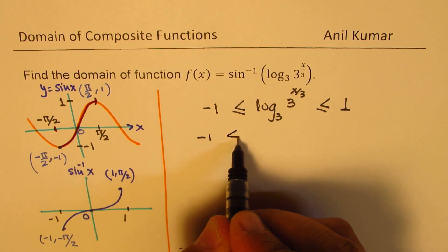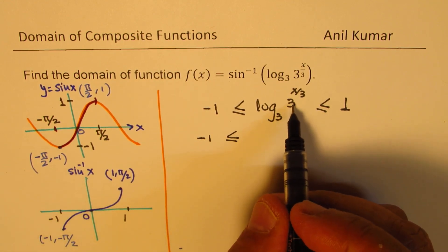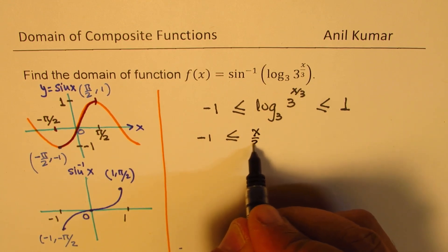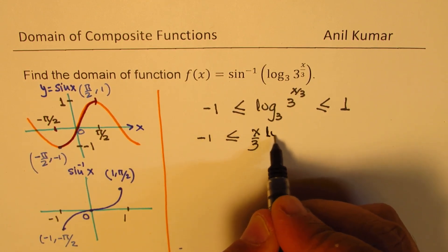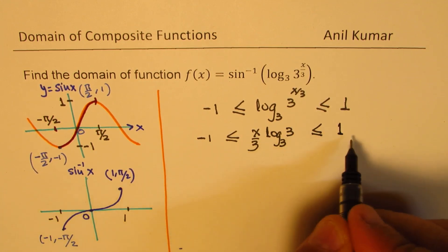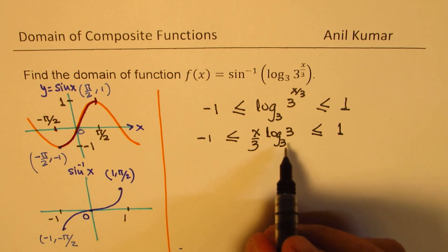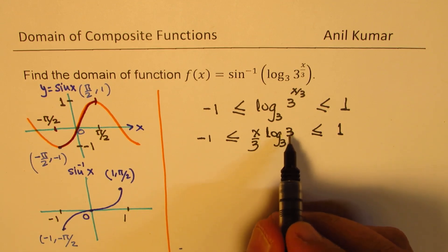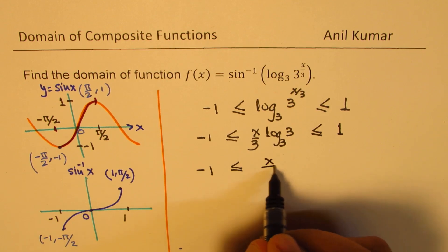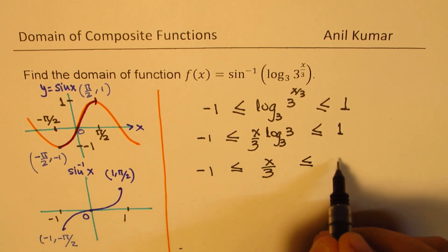Now, understanding the log functions, if the base and this is x, that means we could write this as x over 3 using the power rule and we can write this as log 3 of 3. That should be between minus 1 to plus 1. Log to the base 3 of 3 is 1. So we get minus 1 is less than equal to x by 3 and that should be less than equal to 1.